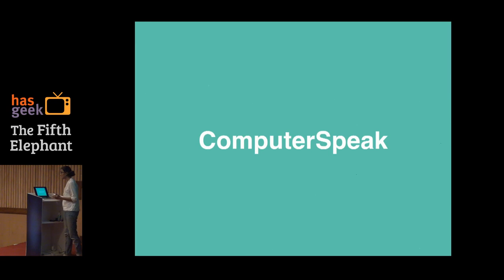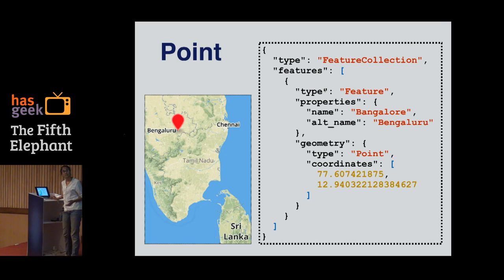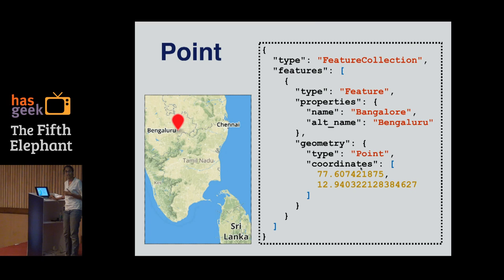But how does this data really look to the computer? When the computer is seeing a point, it's seeing an image, but more importantly it's seeing a JSON structure. I'm going to take some time to break down this JSON structure, because it is important for the rest of my talk. This JSON structure is usually of a type feature collection, which is a collection of the Earth's features, and these features are usually an array of objects. A feature for a point has a type 'feature', some properties which are metadata, and a geometry which contains a type called 'point' and some coordinates.